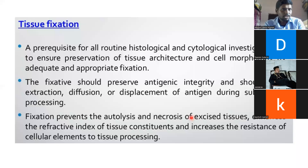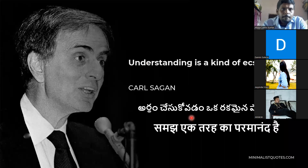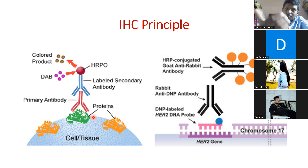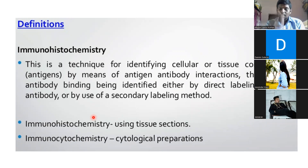Tomorrow's lecture will continue with the methods of fixation in immunohistochemistry. Any doubts in today's lecture? The principle is simple: we take an antigen-preserved tissue, apply the primary antibody, then the secondary antibody conjugated with a substrate that produces color in positive cases. That is the principle — the principle, definition, and introduction are essentially the same thing. Thank you.